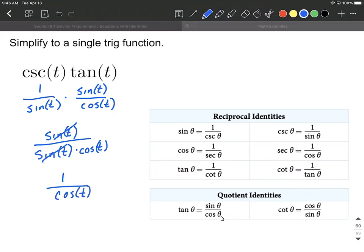From here the last of our simplifying down, we have 1 over cosine of t, looking over at our reciprocal identities that's equal to secant of t.